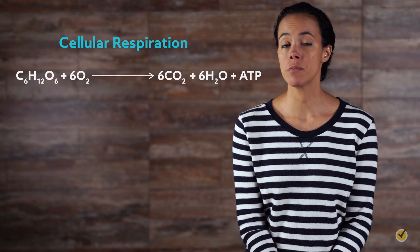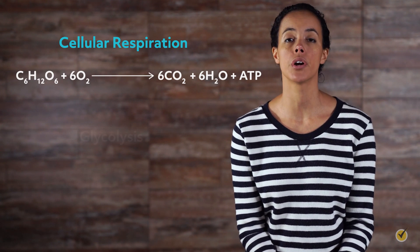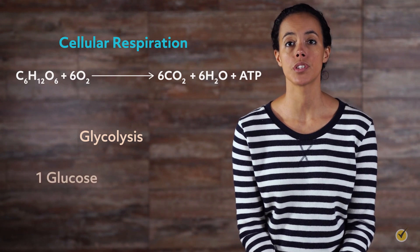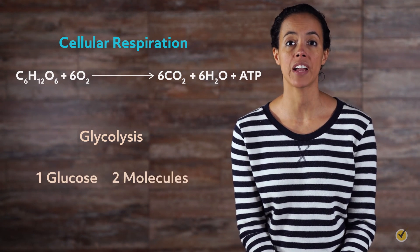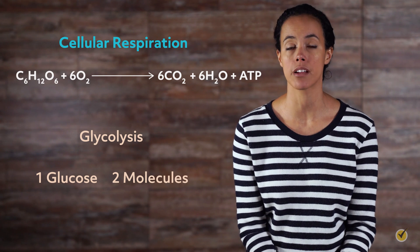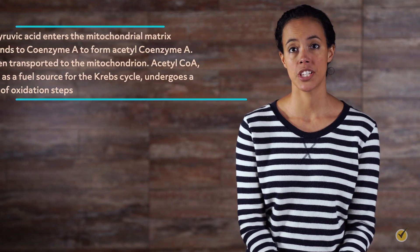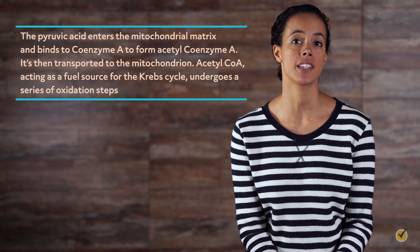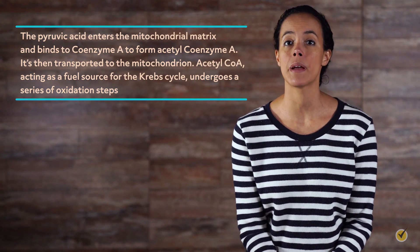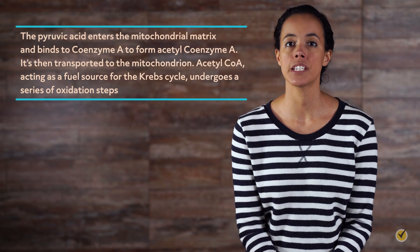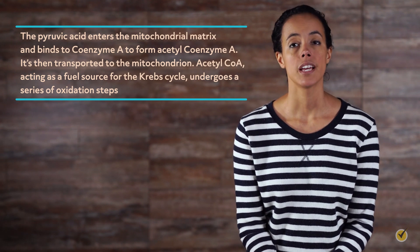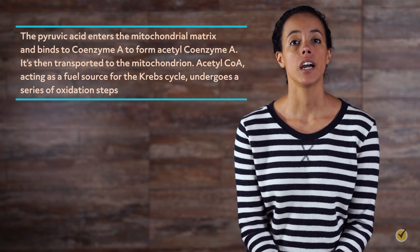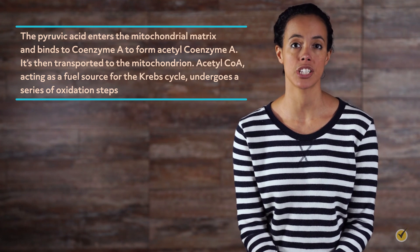When an animal eats, the glucose molecules in food will undergo glycolysis in the cytoplasm to convert one glucose to two molecules of pyruvic acid to be used in the Krebs cycle in mitochondria. In a bridge step, the pyruvic acid enters the mitochondrial matrix and binds to coenzyme A to form acetyl coenzyme A. Acetyl CoA, acting as a fuel source for the Krebs cycle, then undergoes a series of oxidation steps.